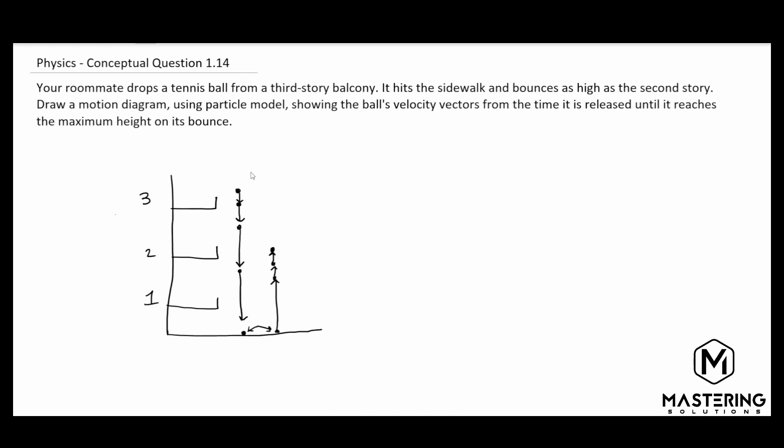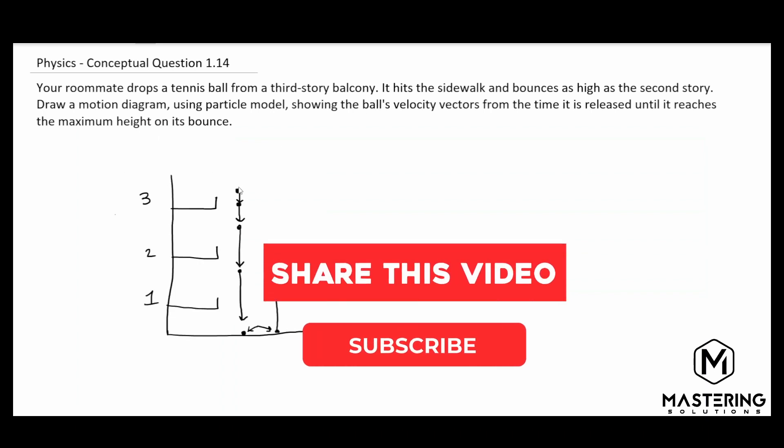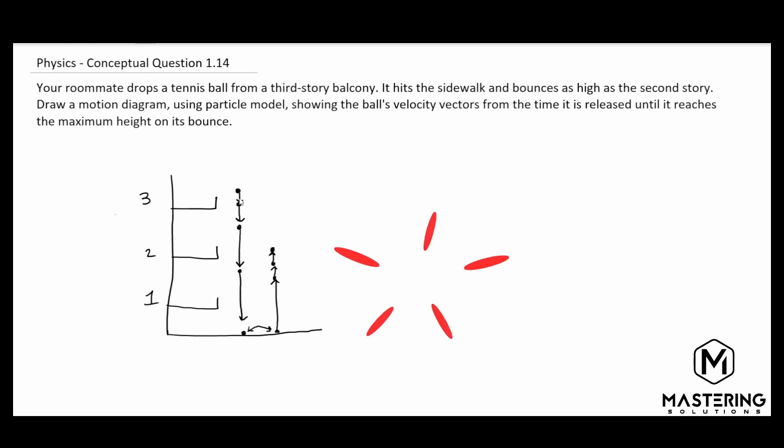So this is the diagram that we're looking for that shows that your friend dropped the ball right off the top of the third floor balcony. And then it picks up speed as it comes down, bounces, changes direction, goes up and it slows, and then it stops. And then if we continued, it would start to go down again and pick up speed and then continue just like that.